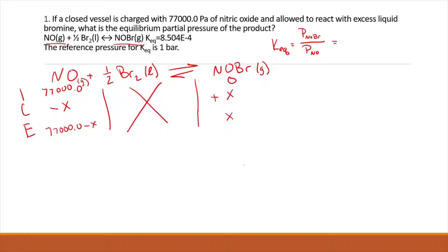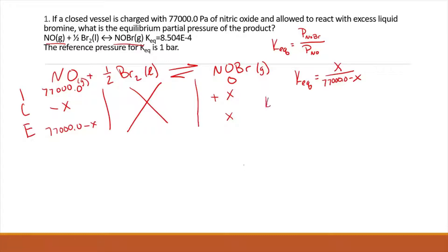Substituting into our Keq what we know at equilibrium: our partial pressure of NOBr is equal to X, and our partial pressure of NO is 77,000 minus X. Now we can go ahead and start solving. We know what Keq is equal to, so multiply both sides by 77,000 minus X, and we get Keq. Go ahead and put our X's on both sides.